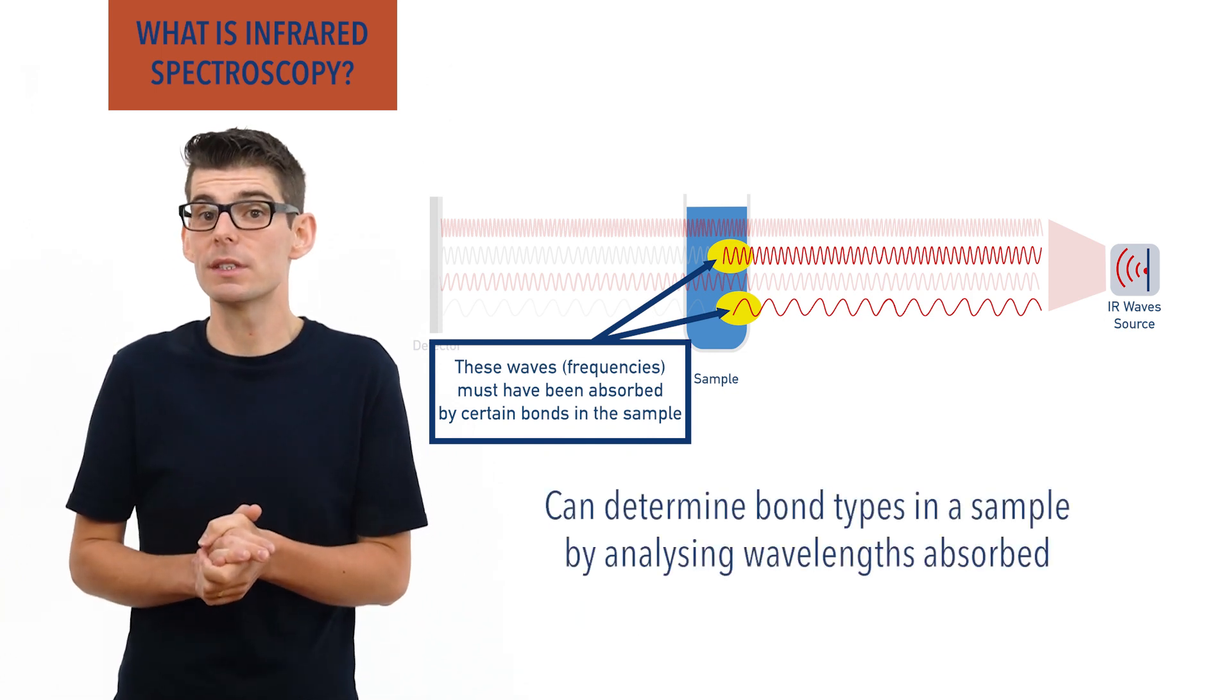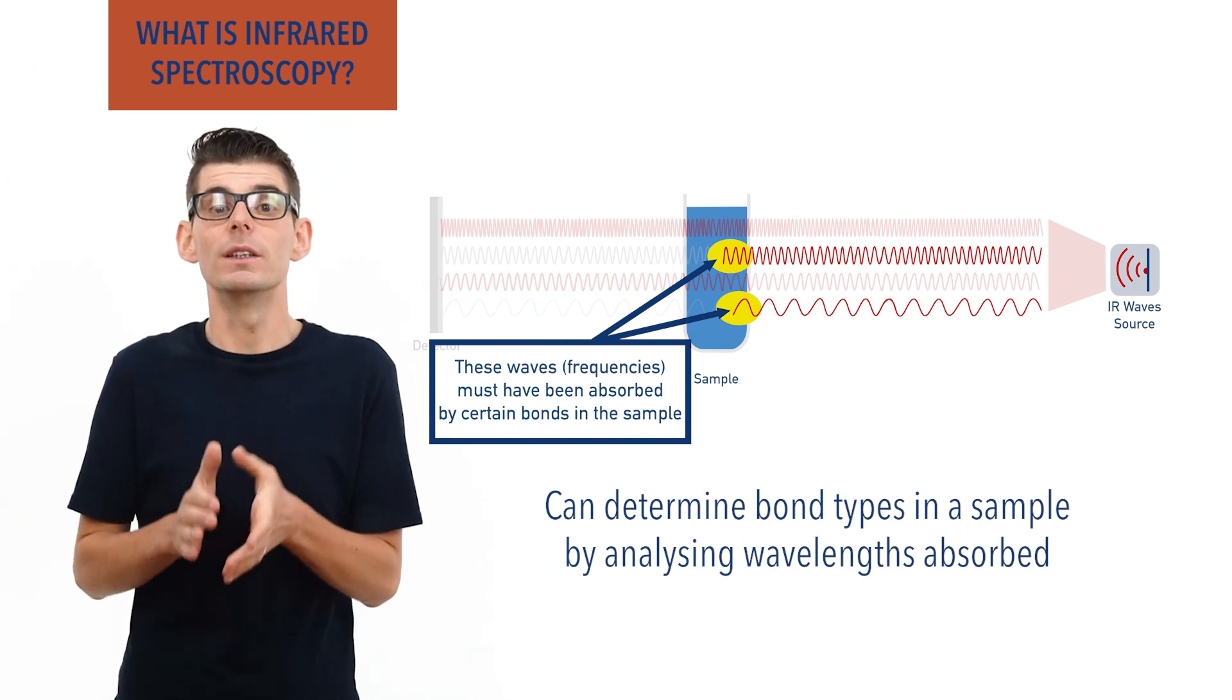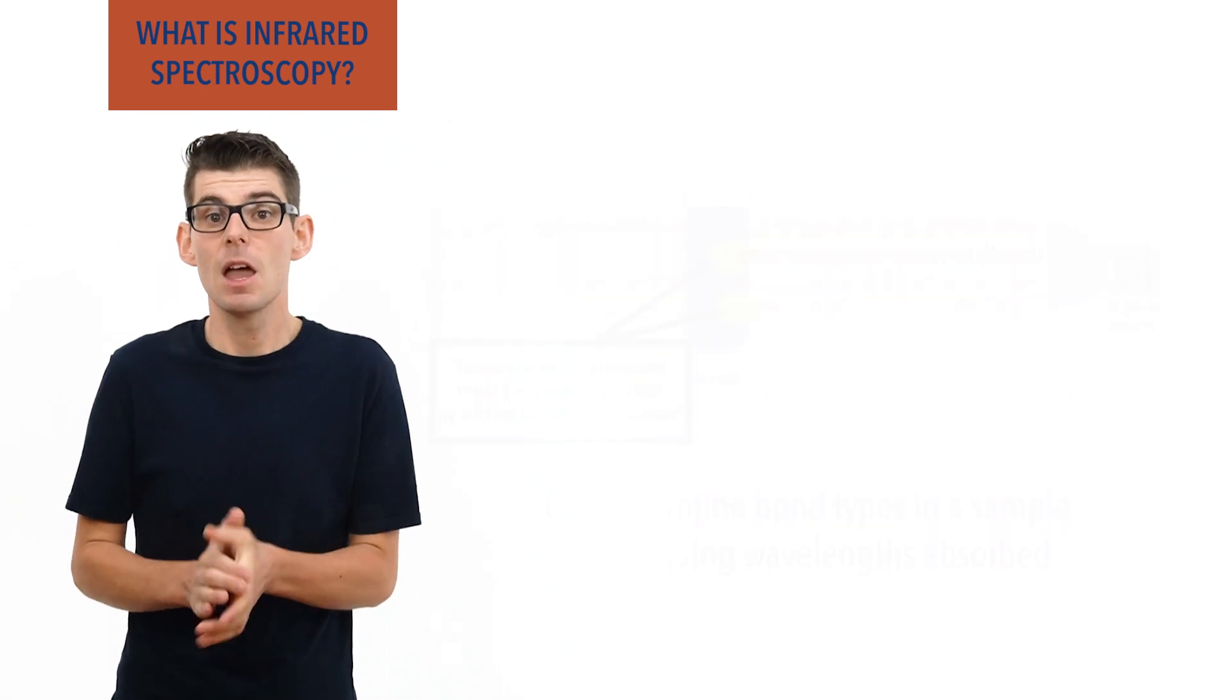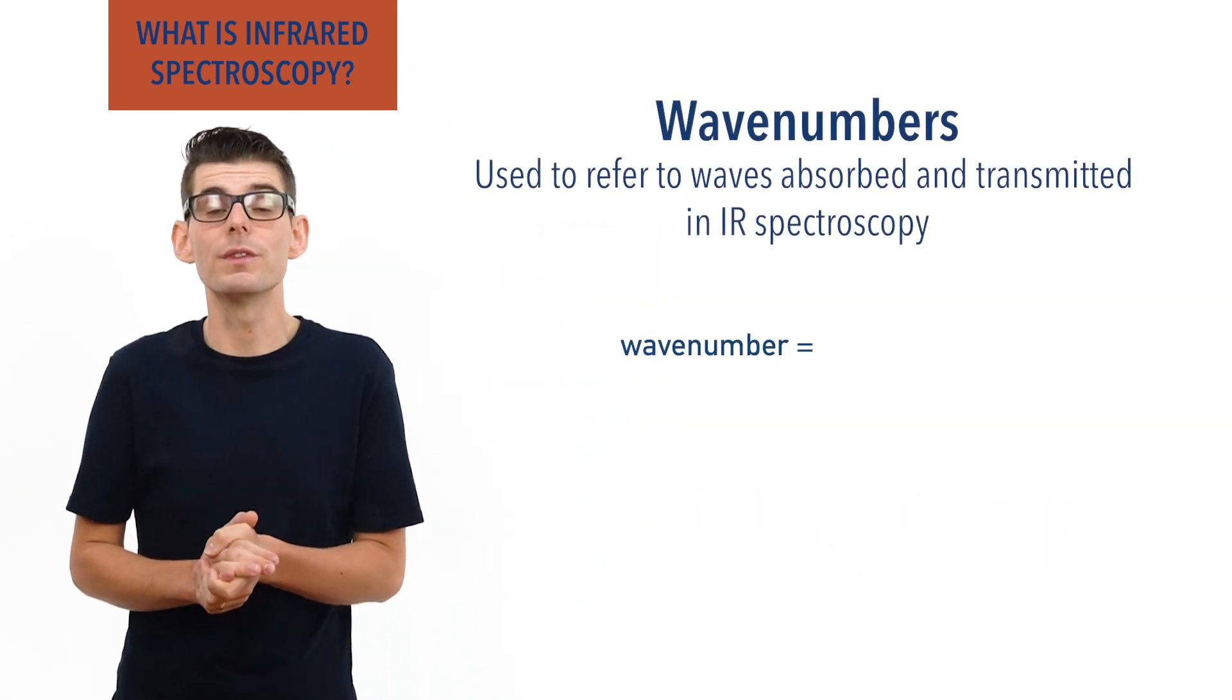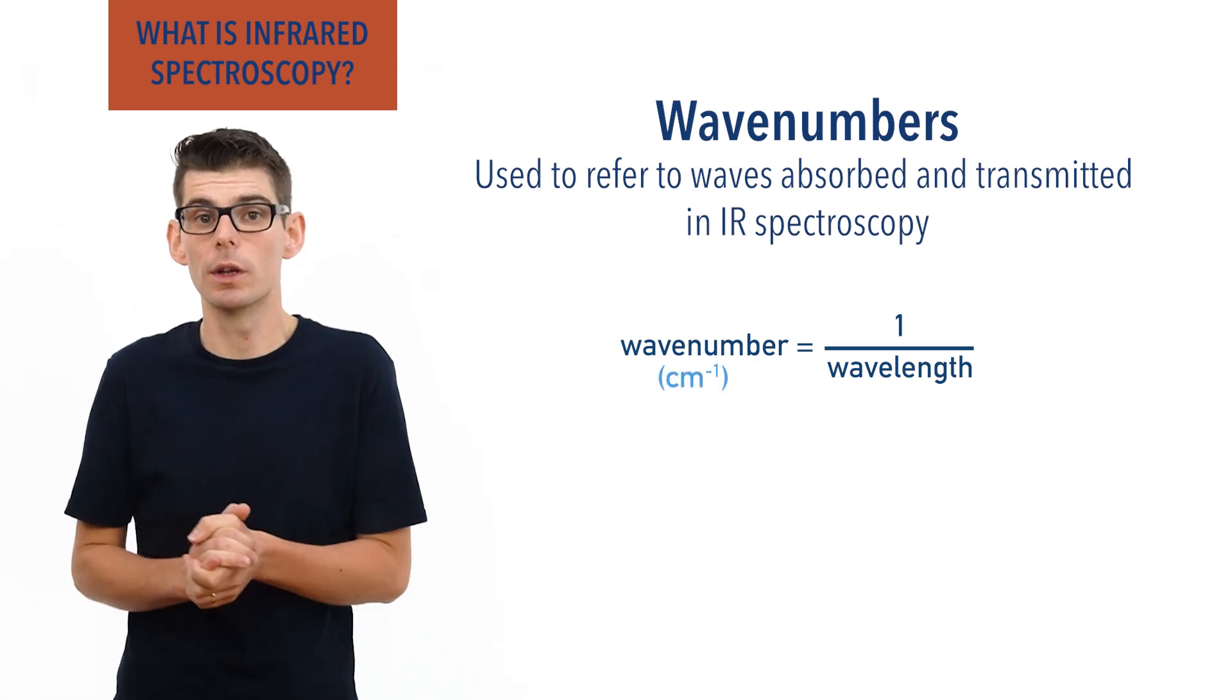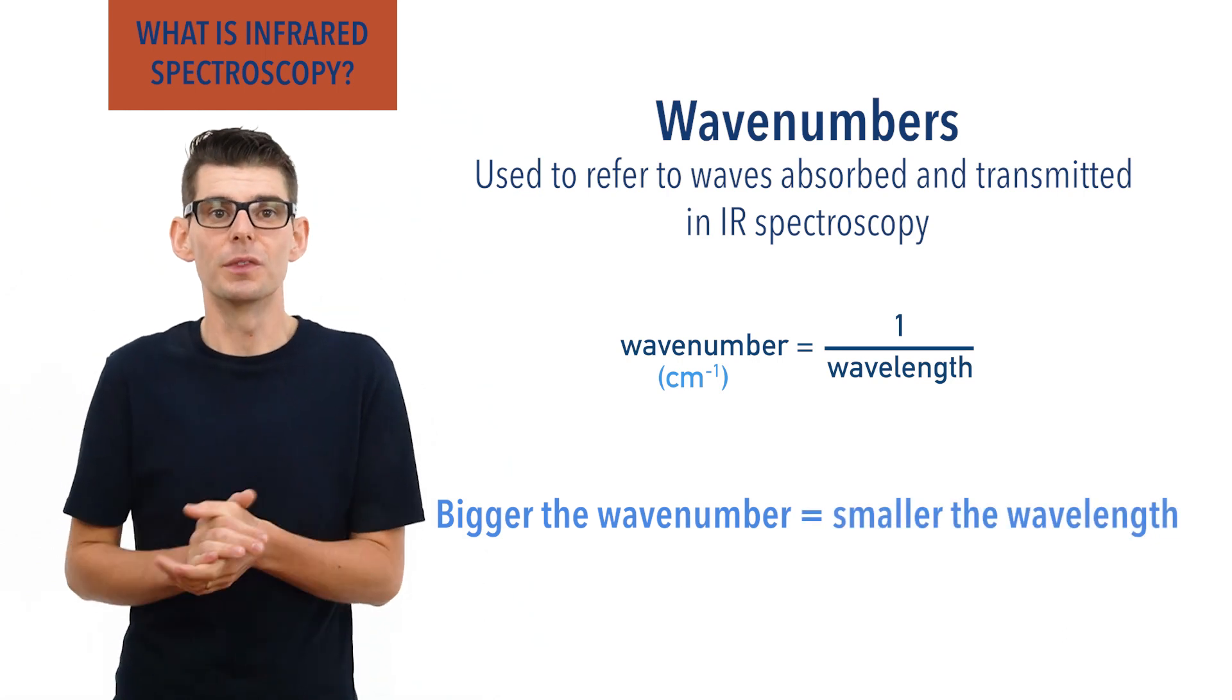Wavelengths are used to distinguish between different IR waves, however, wavelengths are very small, meaning wavenumbers are used instead to make things easier. A wavenumber is just one divided by wavelength with units of centimeter to the minus one. The bigger the wavenumber, the smaller the wavelength and higher the energy of the wave.